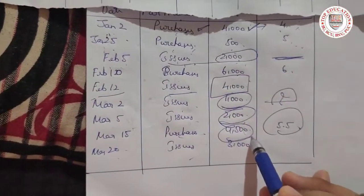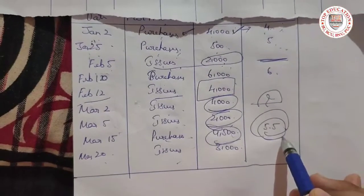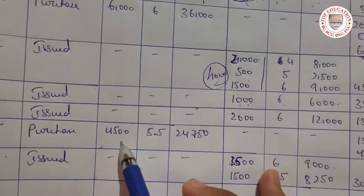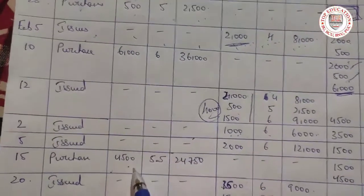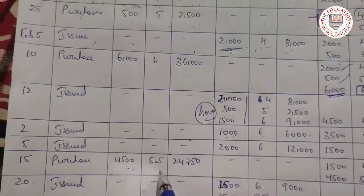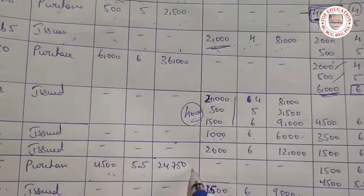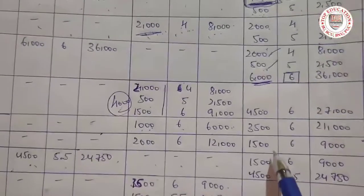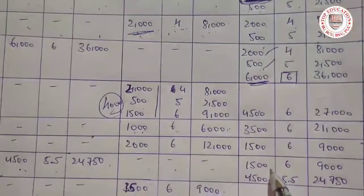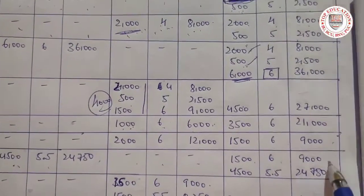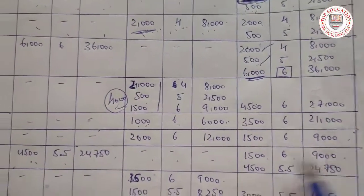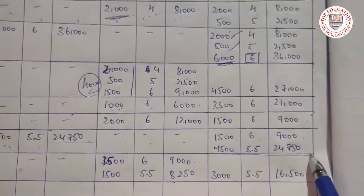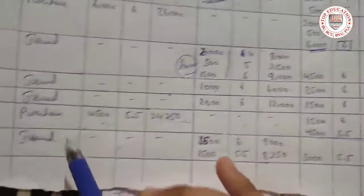Next purchase: 4500 units at rate 5.5. Purchase equals 4500 multiplied by 5.5 equals 24,750. The same is repeated as the closing balance. Now we carry down 1500 at rate 6 giving 9000, and 4500 at rate 5.5 giving 24,750 — total balance carried forward.